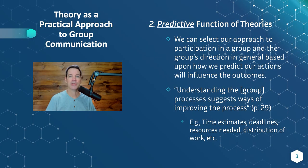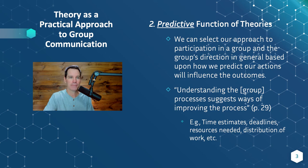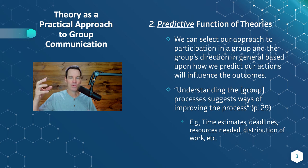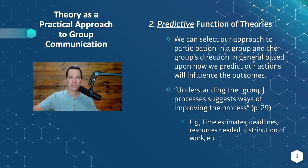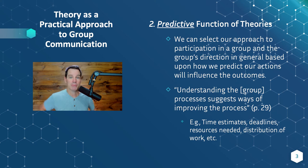The second function is the predictive function of theories. Research can tell us what we might expect as an outcome of our actions. We can select our approach to participation in a group and the group's direction in general, based upon how we predict our actions will influence the outcomes. So theories say groups tend to have these kinds of outcomes when they do A, B, and C, and then you can realize, well, if I want those good outcomes, then as a group we should do A, B, and C, because we could predict good outcomes as a result.